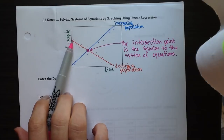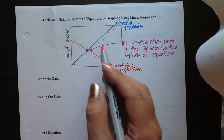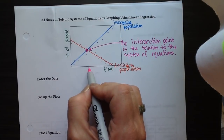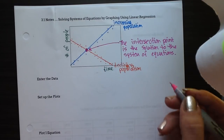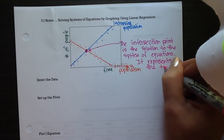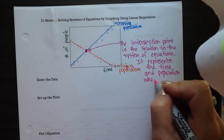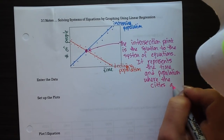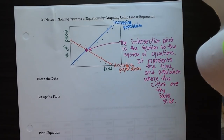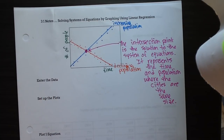Since our two equations represent the population of the orange data and the population of the blue data, when we graph these two and find their intersection, this ordered pair represents the time and number of people where the populations of these two cities are the same. So it represents the time and population where the cities are the same size. Next, I want to go through all the steps to get the data in the calculator and find the intersection points, using data on the back side of this handout.